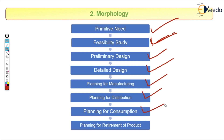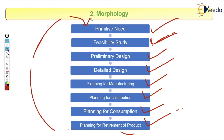Once the product is manufactured, we go to planning for distribution — how to distribute the product to the customer. After distribution, the customer receives the product and we move to planning for consumption: how the fan will be used. The last stage is planning for retirement — for how many years will it work fine? If it retires too early, we recover through studies, designs, and manufacturing again.